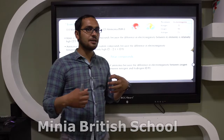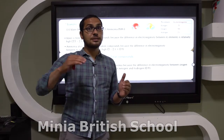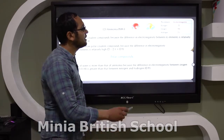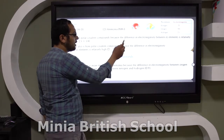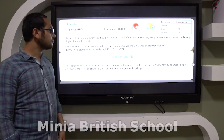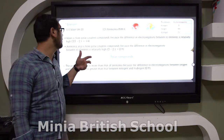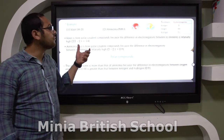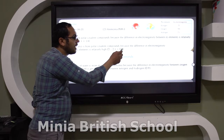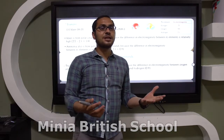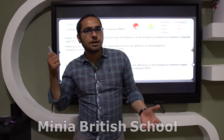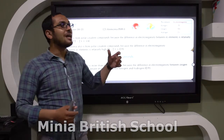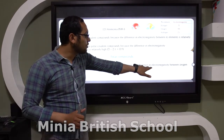Ammonia is also a polar covalent compound because the difference in electronegativity between nitrogen and hydrogen is relatively high, which equals 0.9. Comparing water and ammonia, the polarity of the water molecule is more than the polarity of the ammonia molecule, because the difference in electronegativity between oxygen and hydrogen in water is more than the difference in electronegativity between nitrogen and hydrogen, which equals 0.9.